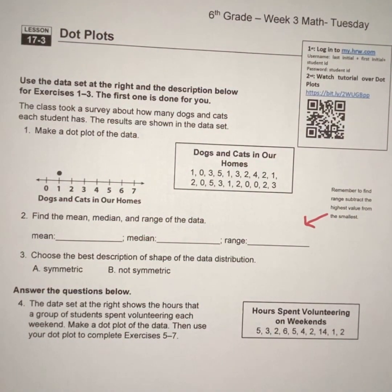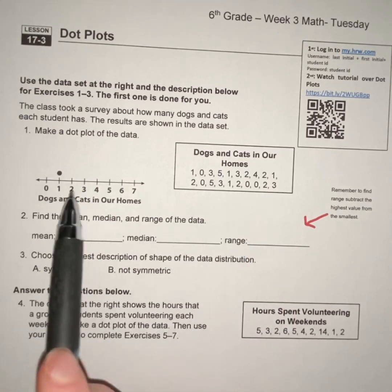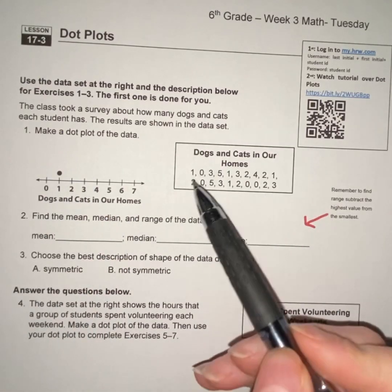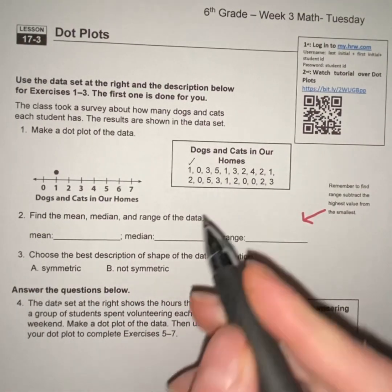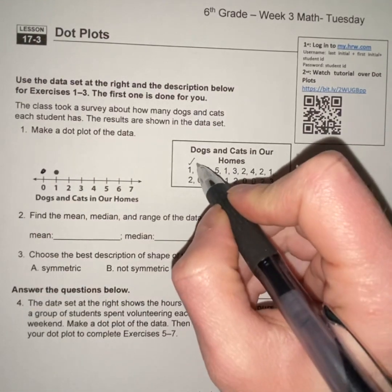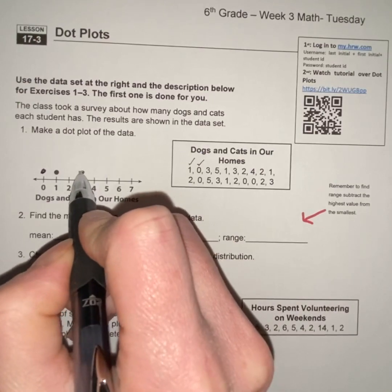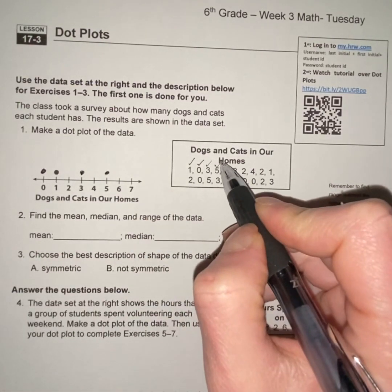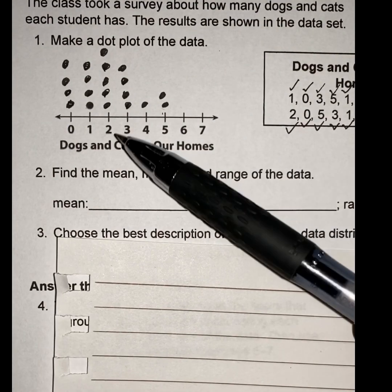Okay, so the first thing we have to do is make a dot plot. We're going to take all of these numbers right here and we're going to put them over here using dots to represent them. So the one is here, mark it off, then zero here. Make sure they stay as even as you can, but you know, I'm not perfect, they're not gonna be perfect. Three, five, and so on.